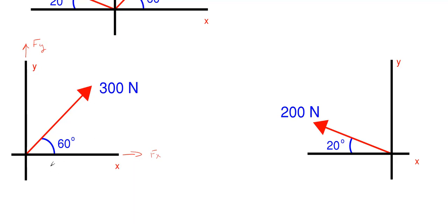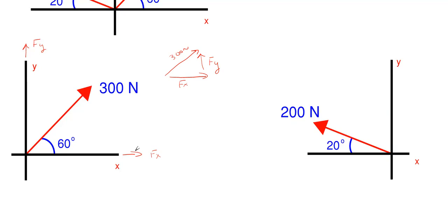Our 300 newtons is going up and to the right, so the y component will be going upward and the Fx will be going to the right. To determine Fy and Fx, it's basically like completing a triangle. We have the 300 newtons as the hypotenuse, Fx along the base, and Fy on the vertical side, with 60 degrees at the angle. You treat this like a right triangle where the forces are the sides.